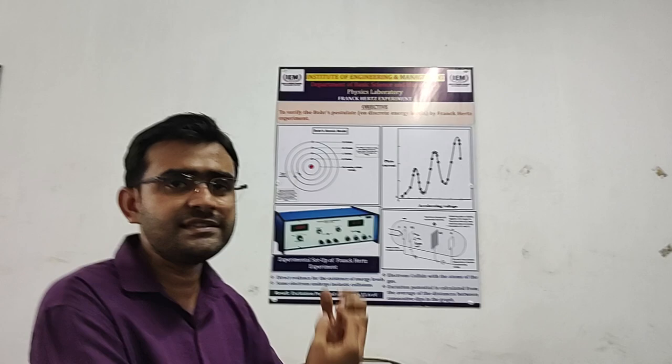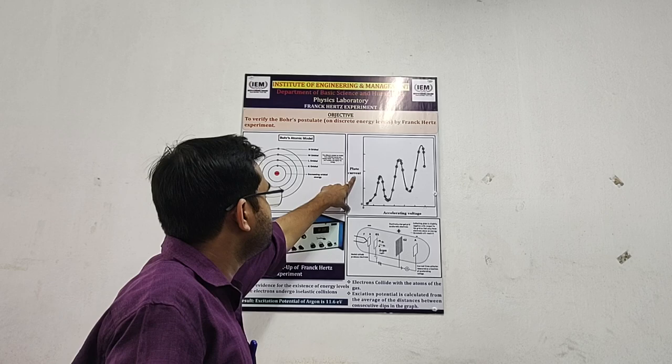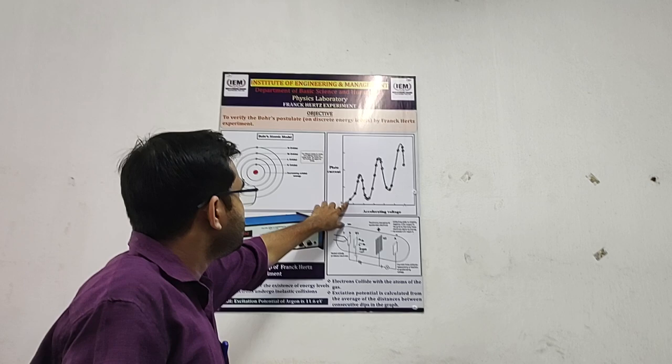Now, if you see the graph of plate current versus accelerating voltage, you will find current is increasing. But at a certain point, the current is now getting decreased.